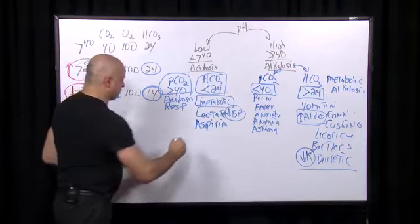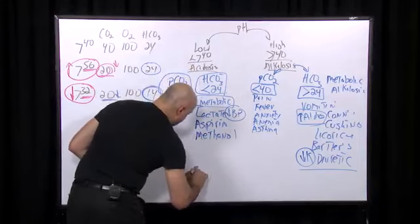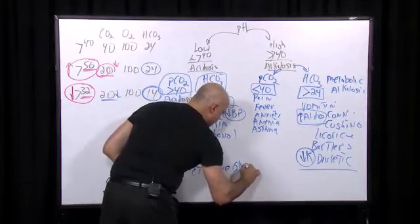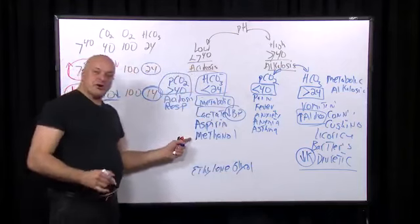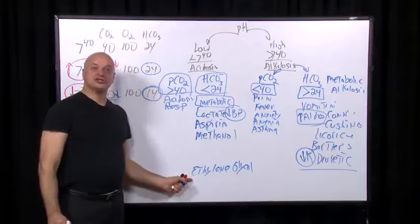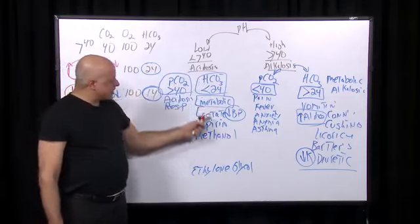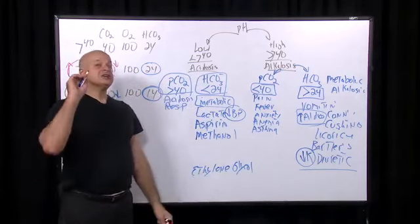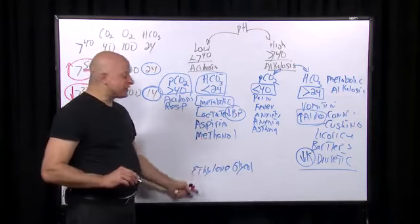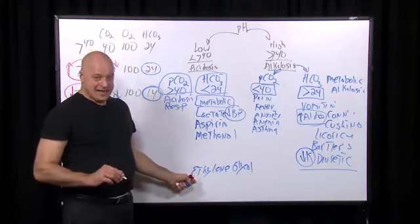Toxic alcohols — methanol, ethanol, and ethylene glycol — also cause metabolic acidosis. Methanol is metabolized to formic acid; ethylene glycol is metabolized to oxalic acid. Also in metabolic acidosis: renal tubular acidosis and diarrhea. How do you distinguish these from the others? By the anion gap.